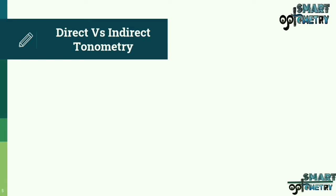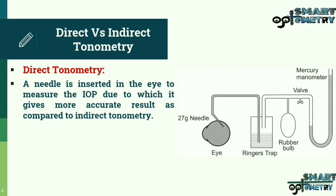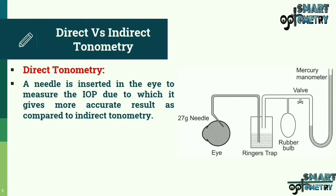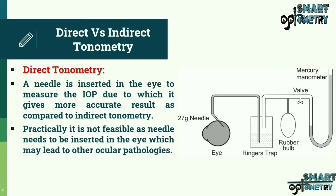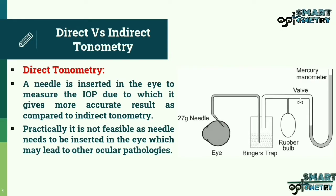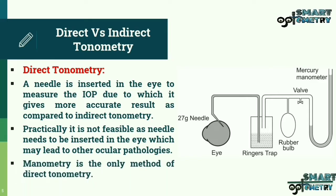Direct tonometry: a needle is inserted in the eye to measure IOP, which gives more accurate results compared to indirect tonometry. However, it is not practically feasible as inserting a needle into the eye may lead to other ocular pathologies. Manometry is the only method of direct tonometry.